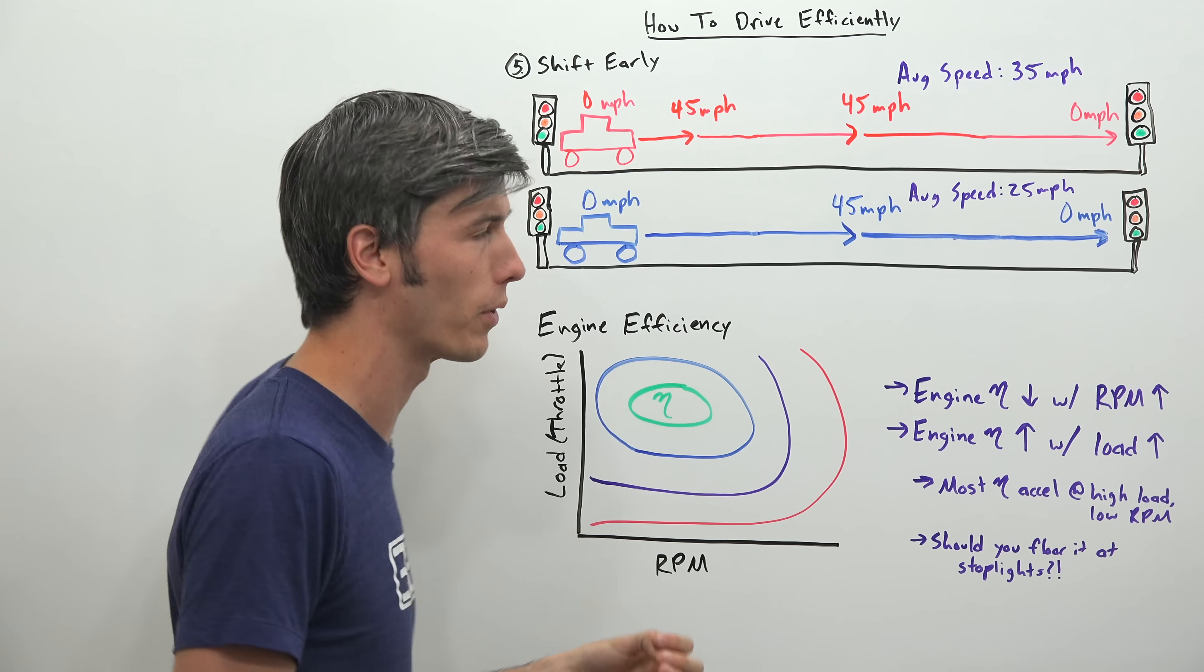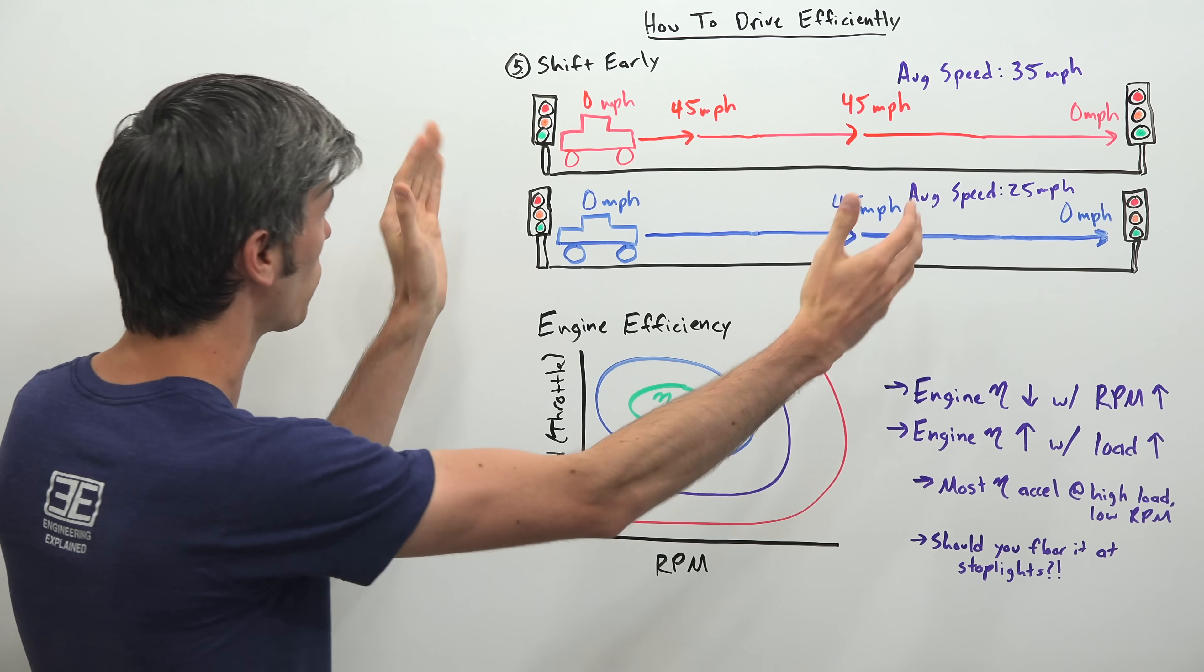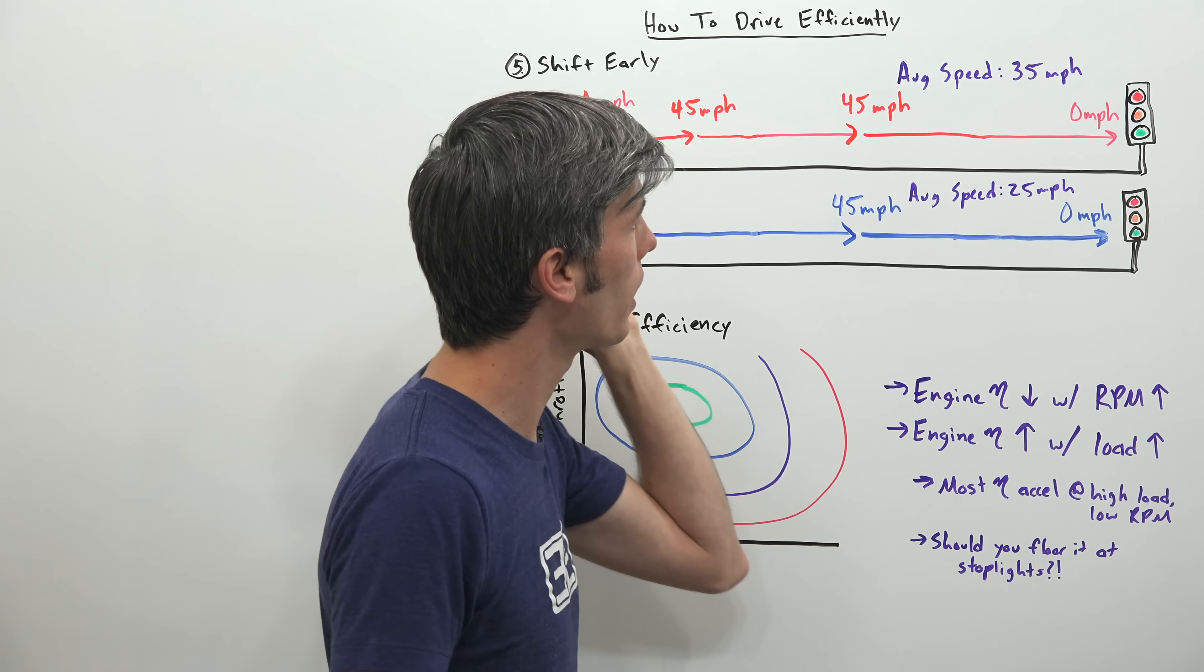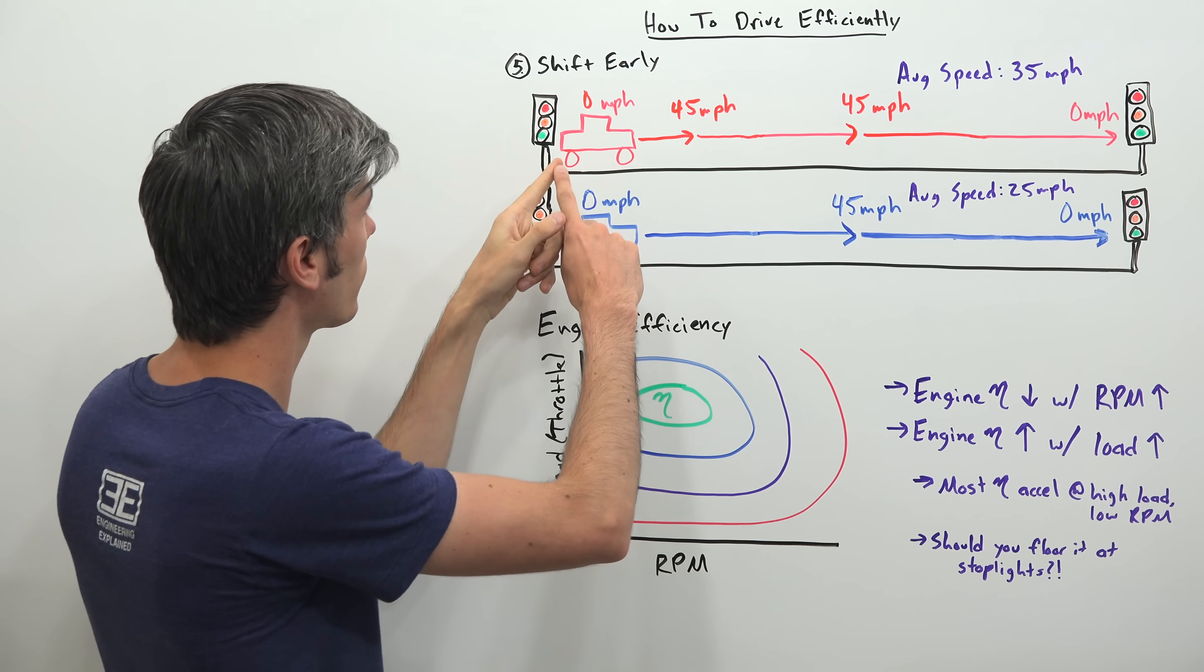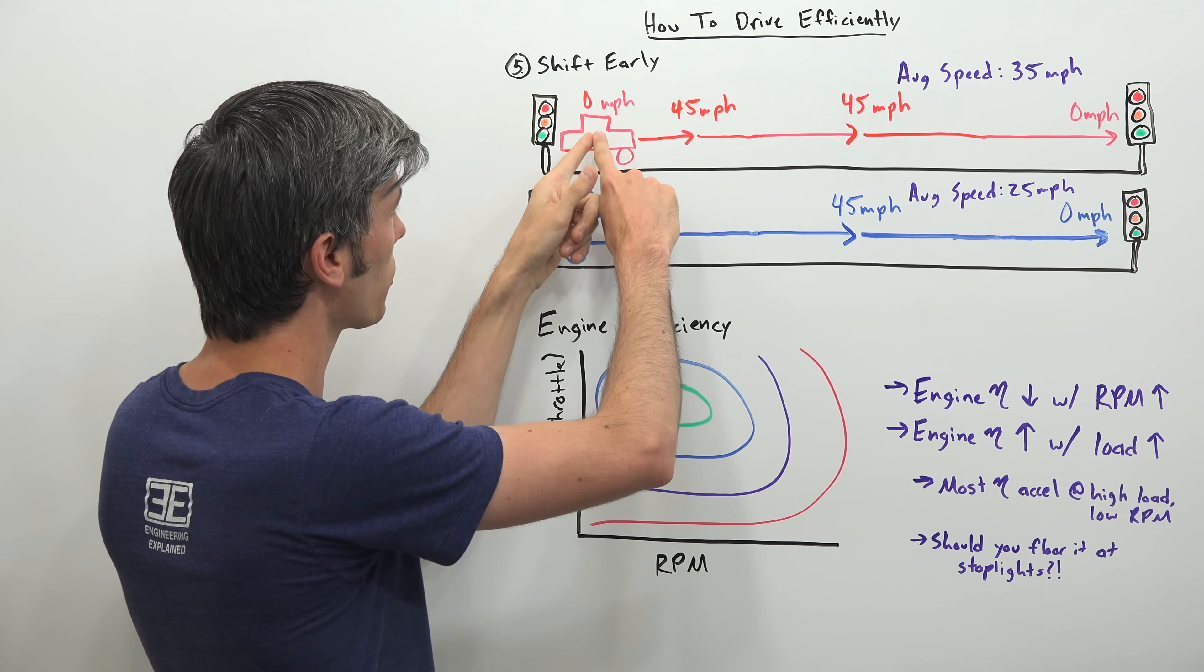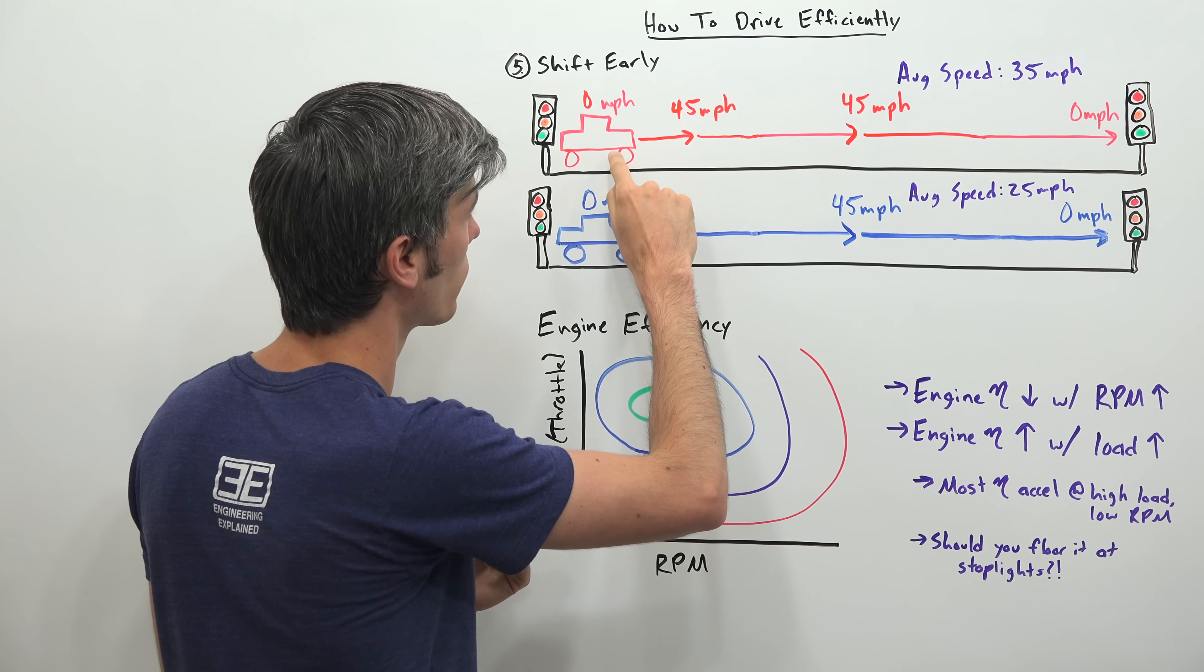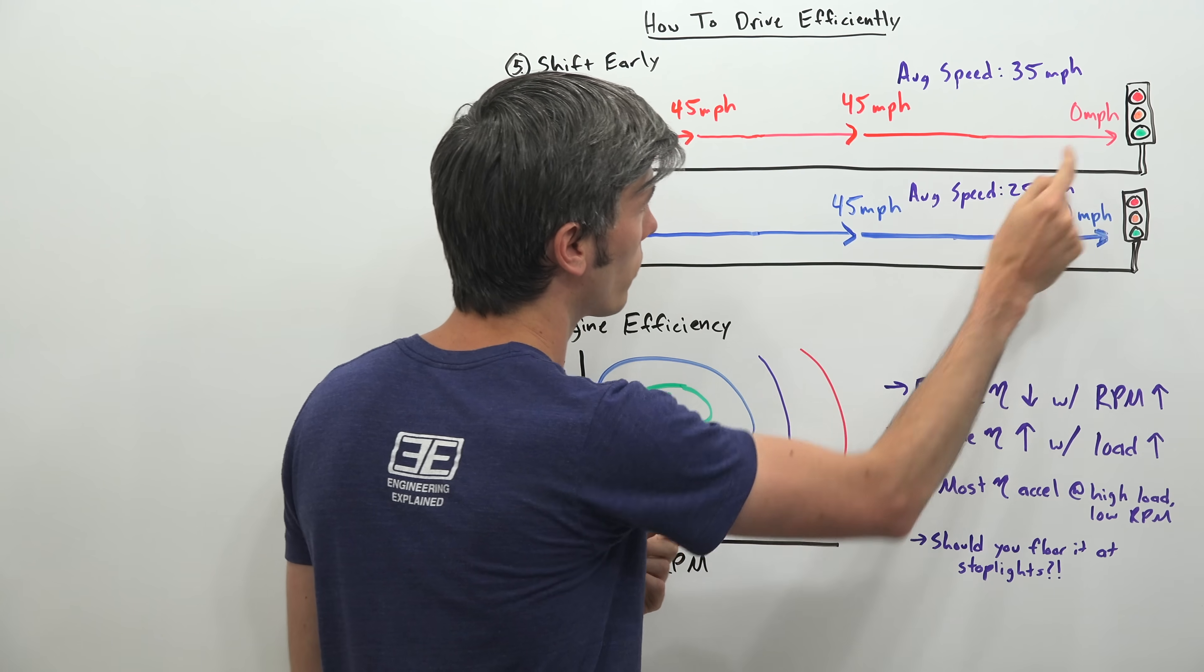Well, it doesn't quite work out that way. You don't get to drive faster and get better fuel economy. So here is why. So if you look at two different scenarios here. We're starting at a stoplight. And then we're accelerating up to 45 miles per hour. And then we're coming back to another stoplight. So as we accelerate here in this first scenario. The bad scenario. Going from 0 miles per hour to 45 miles per hour very quickly. So we're using high throttle and we're shifting early. And we're keeping that engine in that very efficient region. We get up to 45 miles per hour. We stay there. And then we start to slow down for that stoplight.